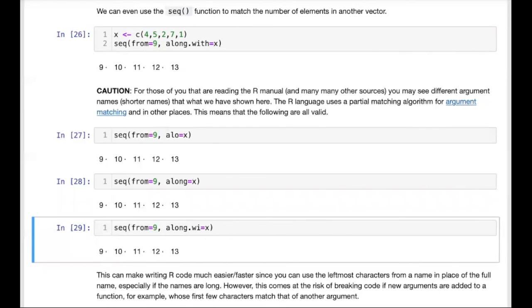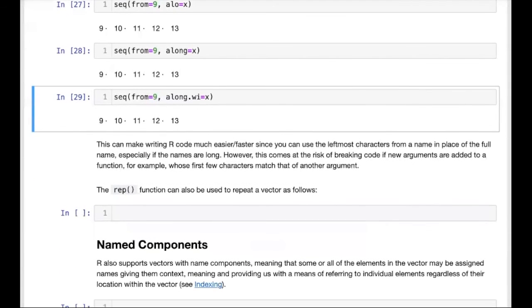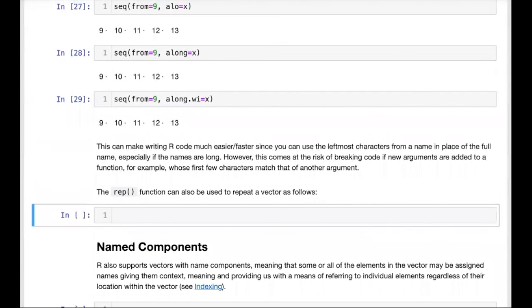To wrap up this section, I do want to point out another function which, similarly to sequence, can help us to create vectors, and that is the repeat function. This function simply repeats a vector that we pass as an argument by some specified number of times. To do this, we write repeat, or REP, and we pass a vector. So let's create a vector 42 and 2, and then we specify the number of times that we want to repeat this vector, 3 for example.